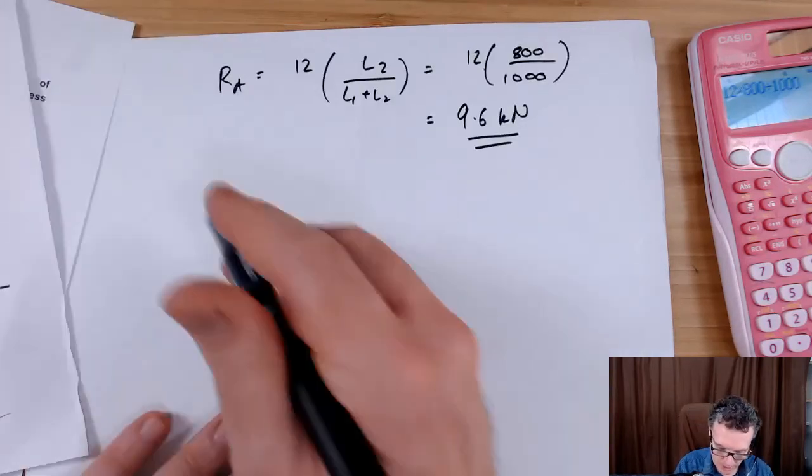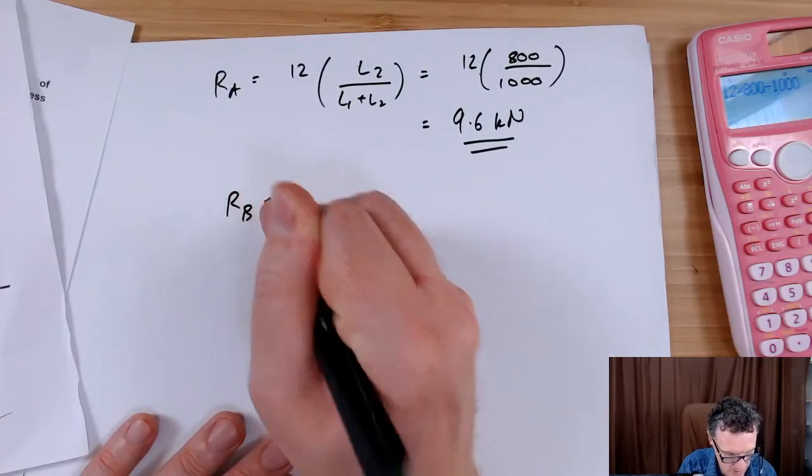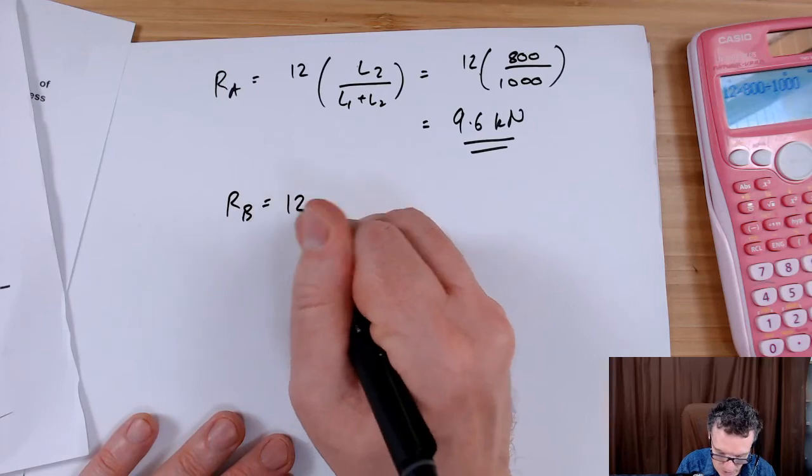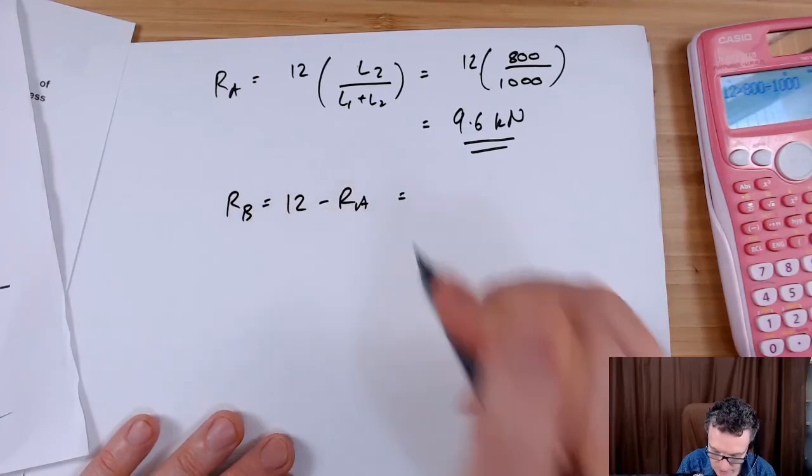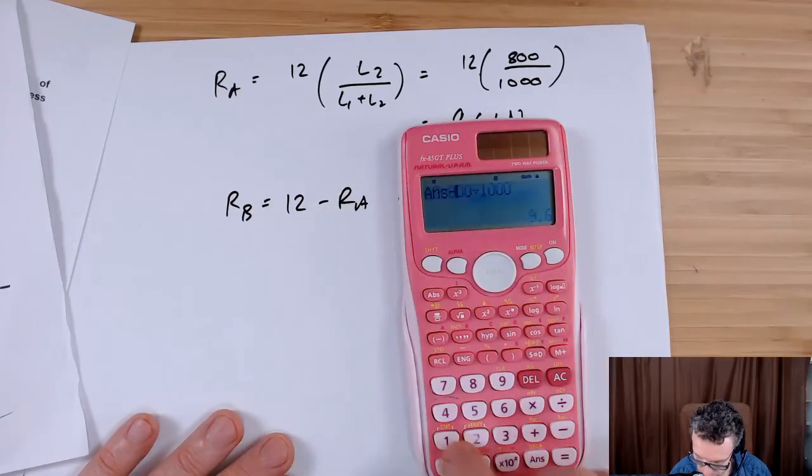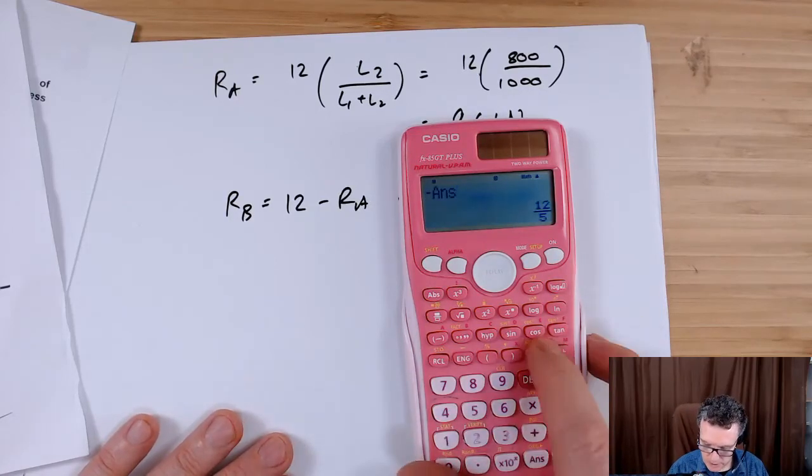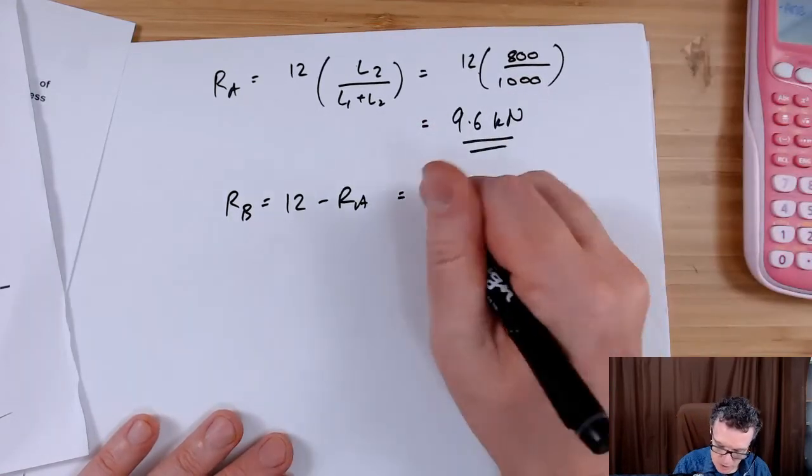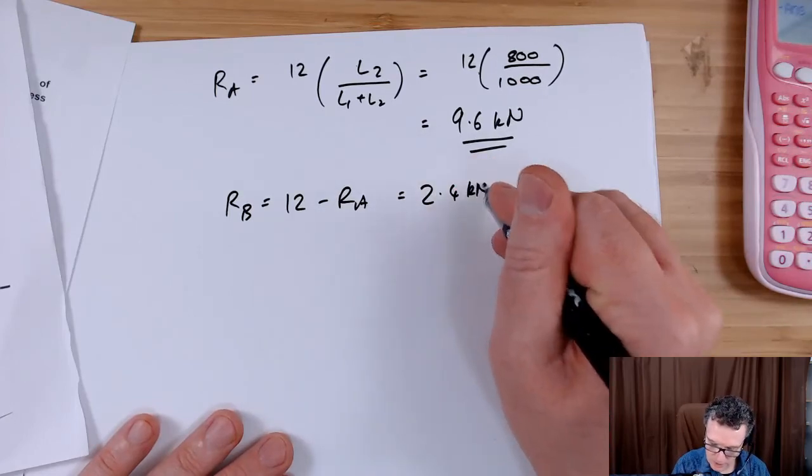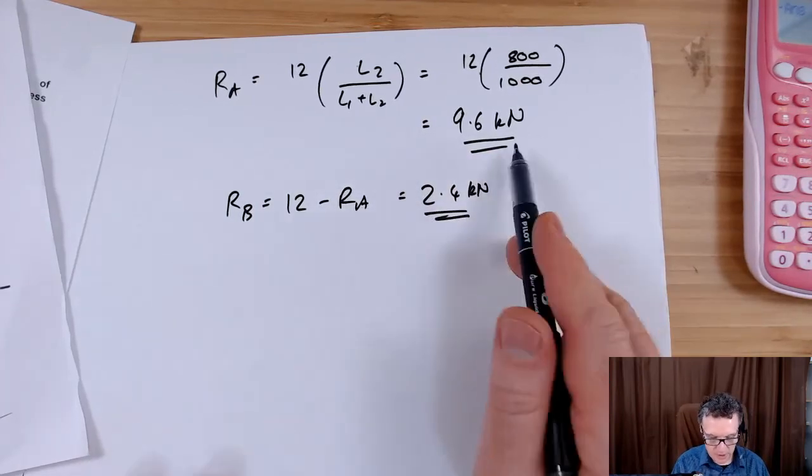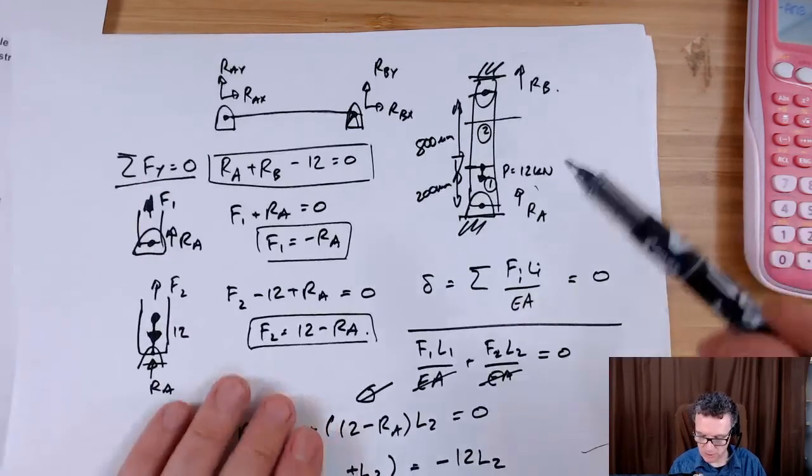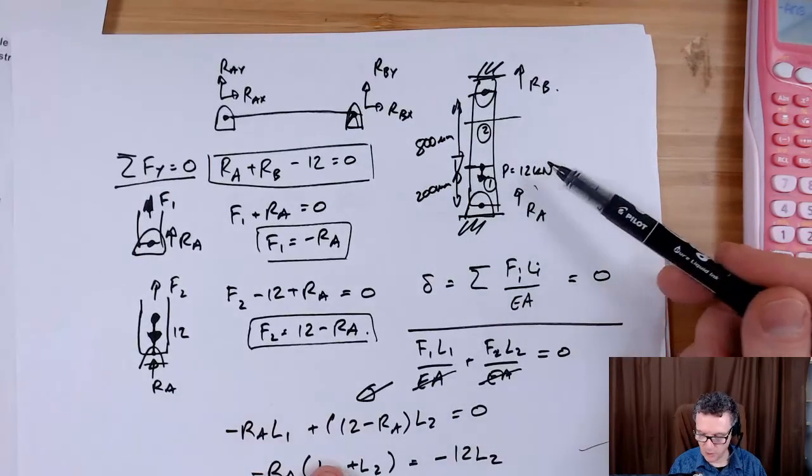And then all I need to do is go back to this equation here to find out Rb. So Rb equals 12 take away Ra, so that's going to be 2.4 kilonewtons.